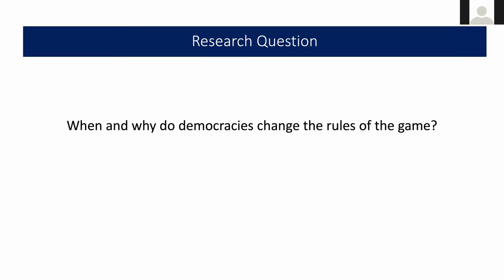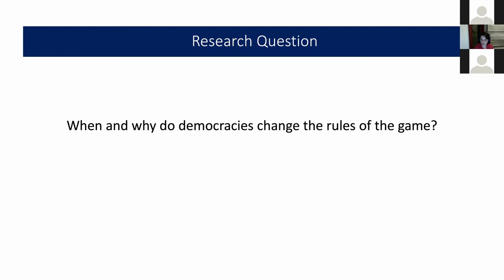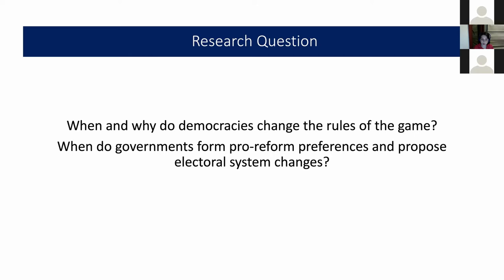In this paper, I incorporate both failed and successful electoral reforms together to analyze when and how governments form pro-reform preferences and propose an electoral system change. The incorporation of failed attempts is very important because these attempts show that governing parties have an interest in changing the electoral system and are motivated enough to come up with different proposals. I analyze the conditions under which governments initiate an electoral reform and build on explanations based on party system variables. There is a strand of literature that aims to identify when electoral reforms will become more likely in a given political system.